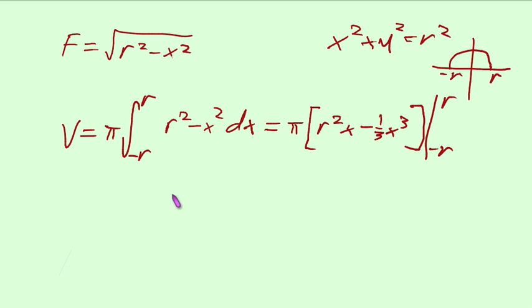Doing that evaluation is going to give us pi times r to the third minus r to the third over 3, minus pi times negative r to the third plus r to the third over 3.